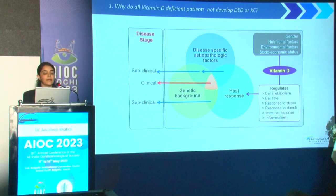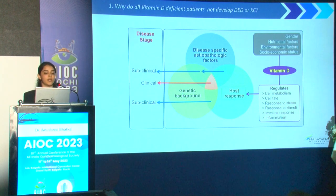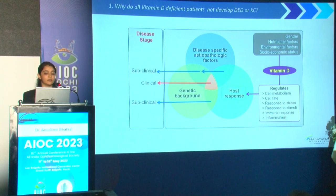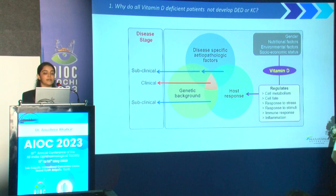Vitamin D basically affects the host response — that is, how the cell is going to respond in a stress situation. So if the patient is only vitamin D deficient and the other factors are not strongly present, then the patient will likely develop a subclinical form of the disease.